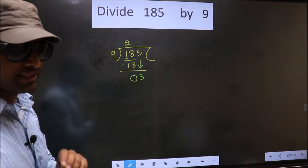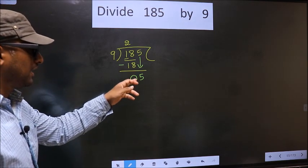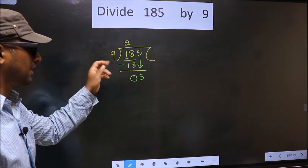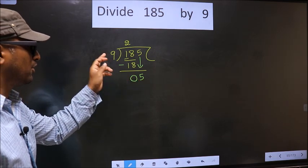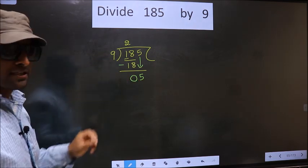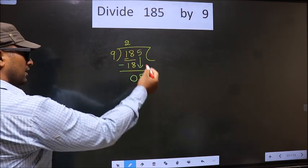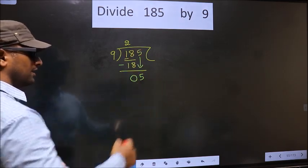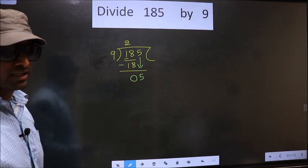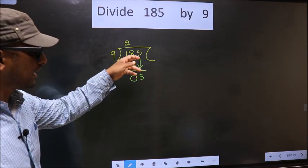The mistake is this: here we have 5, here 9. 5 is smaller than 9. So what many do is they put a decimal point and take 0 here, which is wrong. You just brought the number down.